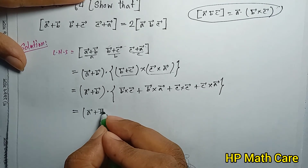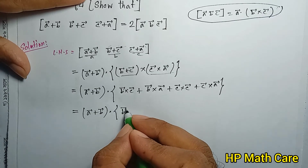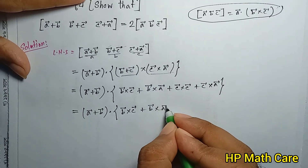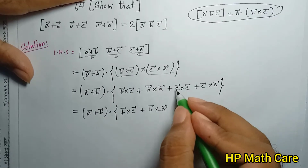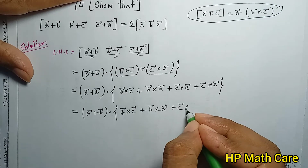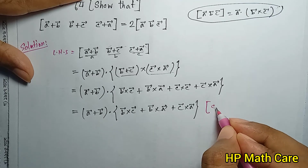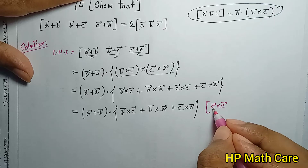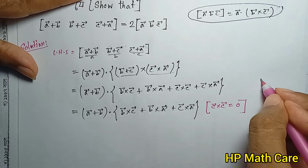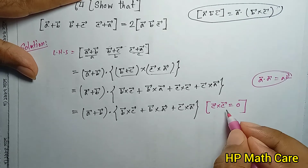Expanding (a+b) dot (b cross c plus b cross a plus c cross c plus c cross a): note that c cross c equals zero and b cross b equals zero. So we are left with (a+b) dot (b cross c plus b cross a plus c cross a).